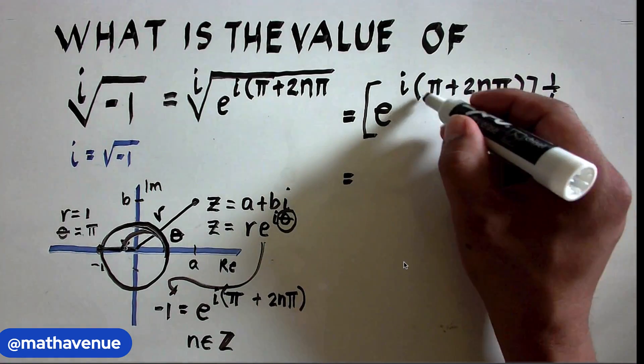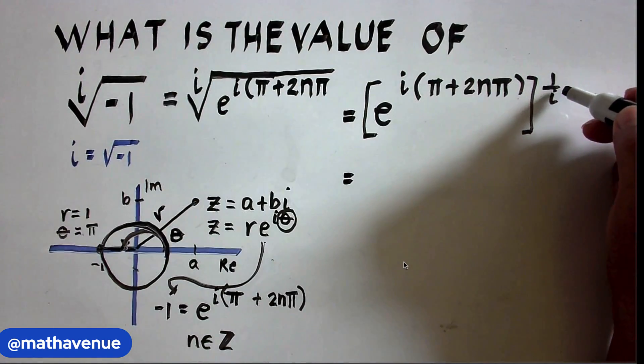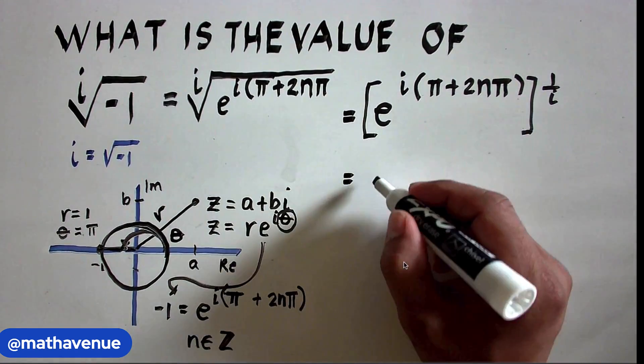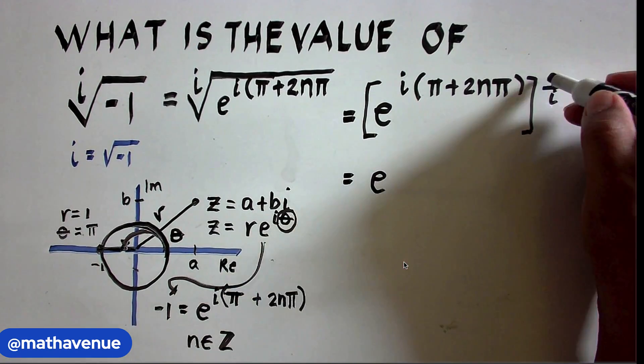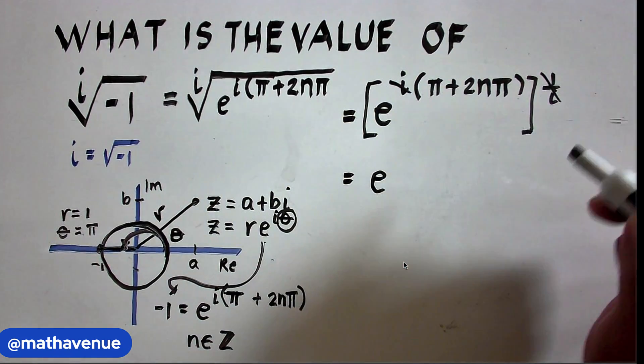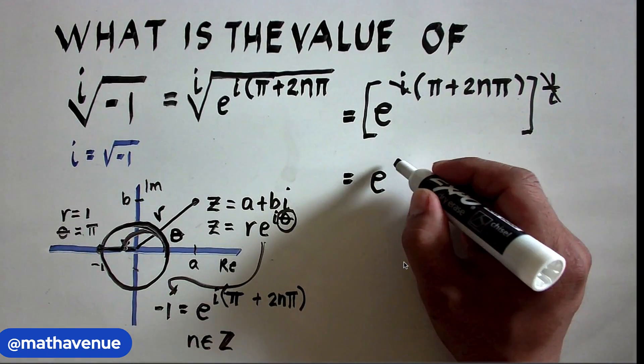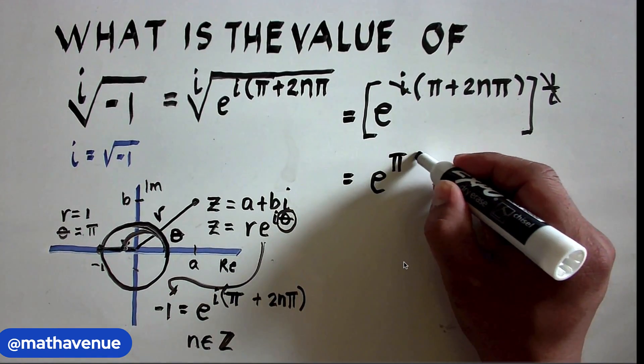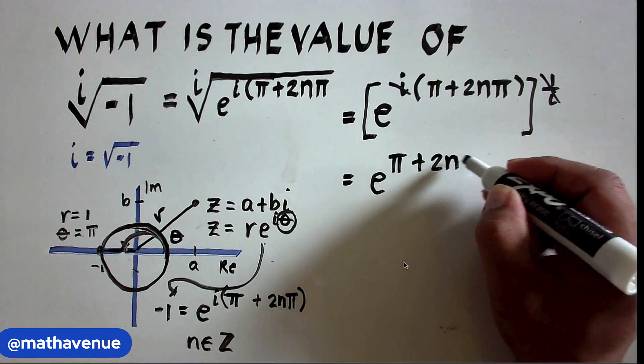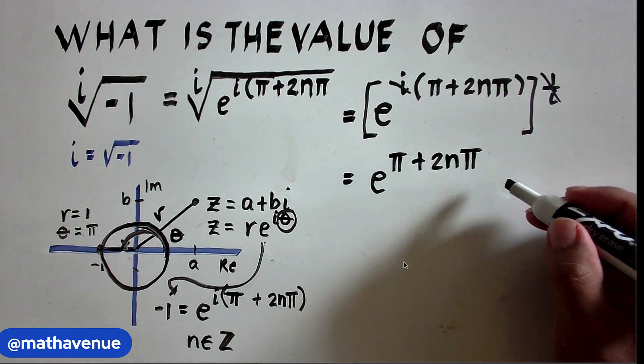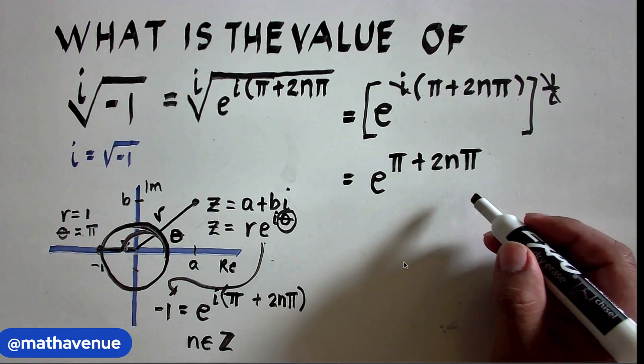By the power of a power law of exponents, we can multiply this inside exponent times the outside exponent here. So, we will end up at e^(π + 2nπ), where n is an element of the set of integers.